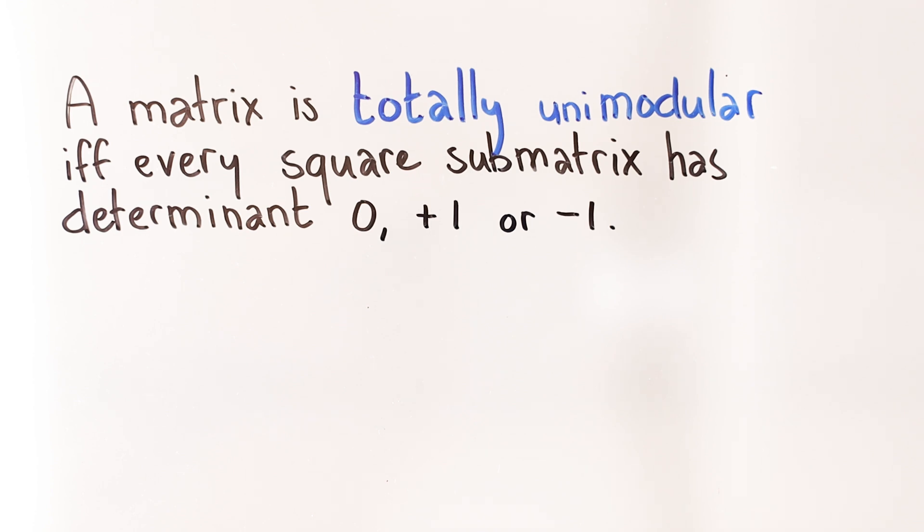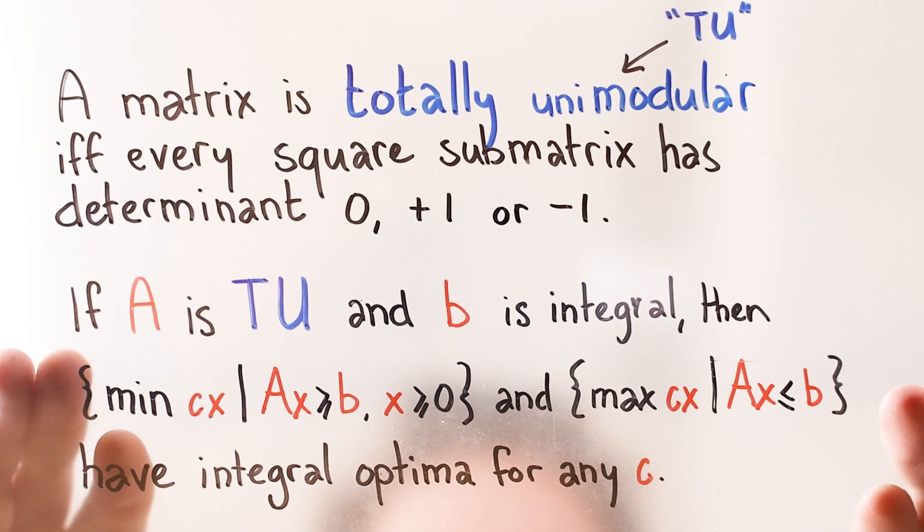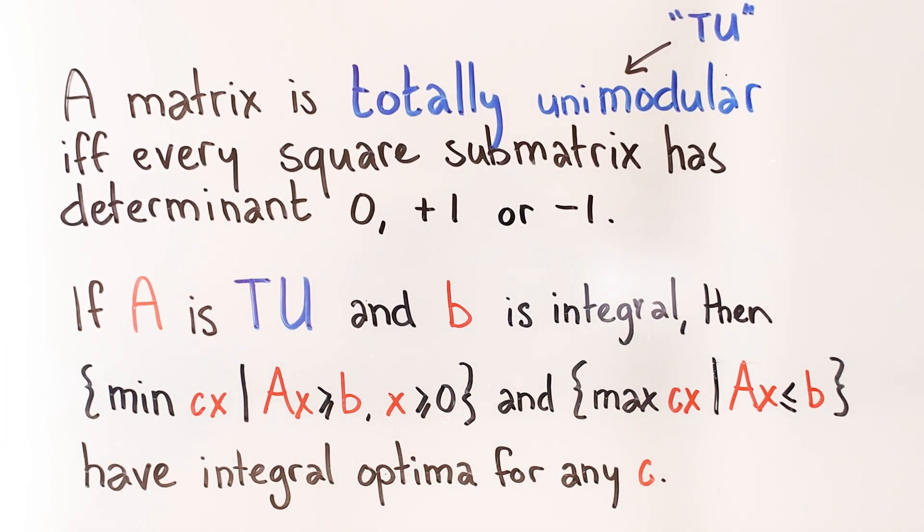It doesn't really help that I don't have a great intuition about determinants, but here's the thing. Let A be a totally unimodular matrix, then the standard linear program with AX less equal B is integral, and all extreme points of the feasible region have integer coordinates.